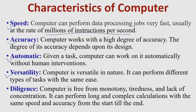A computer can perform almost every kind of task given to it. For example, at one moment I am playing songs on the computer, on the next moment I am watching a movie, after that I am playing a video game, and after that I am doing graphics designing. All these tasks are of different nature, and the computer can perform all of them with the same ease, speed, and accuracy.